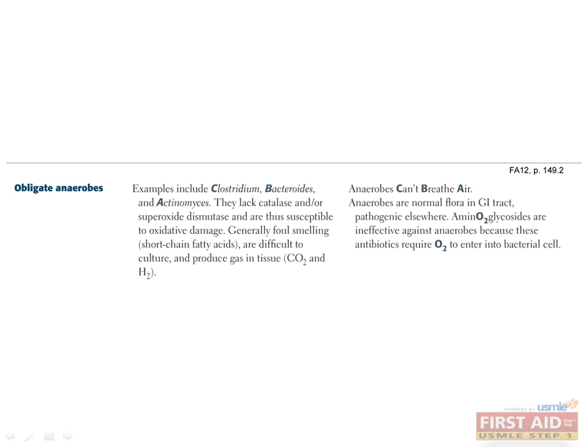Obligate anaerobes survive only in the absence of oxygen and are incapable of growing in the presence of oxygen. This is because they lack the enzyme superoxide dismutase and/or catalase, which are important antioxidant neutralizing mechanisms against the toxic compound superoxide. Superoxide forms when organisms are exposed to oxygen, and without superoxide dismutase it cannot be converted into benign molecules. Catalase breaks down hydrogen peroxide into water and oxygen, preventing conversion of hydrogen peroxide into free radicals. Obligate anaerobes include Clostridium, Bacteroides, and Actinomyces, and they are resistant to aminoglycosides since these drugs require oxygen to enter cells.